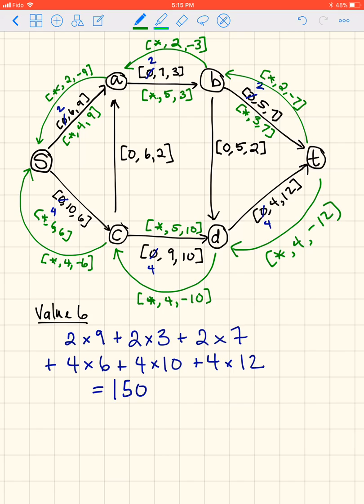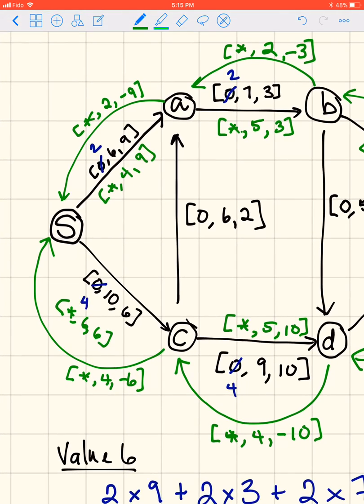We could, looking at the beginning of our network here. We've got two units of product going from S to A at a cost of nine each, and four going from S to C, but at a cost of six each. So it might make sense to take the two off of S to A and add it to S to C, and we'd save ourselves the difference between 18 and 12. We'd save ourselves six dollars, or whatever our money unit is.